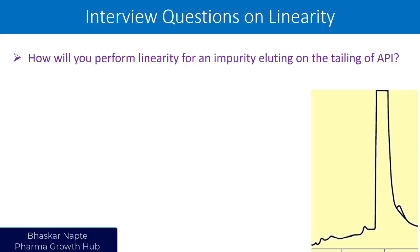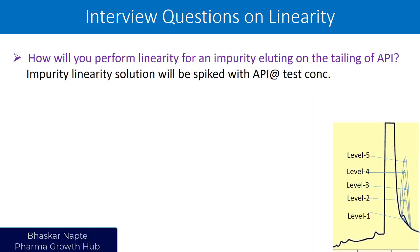What is the constraint in achieving the response for the impurity? It is not the detector alone, but also the interference coming from the API peak. So we need to replicate real-life conditions. We need to make sure that we perform the linearity in the real-life sense — meaning when our API is present in the test solution at its test concentration. Whatever linearity studies you perform for that particular impurity must have the API present at its test concentration level.